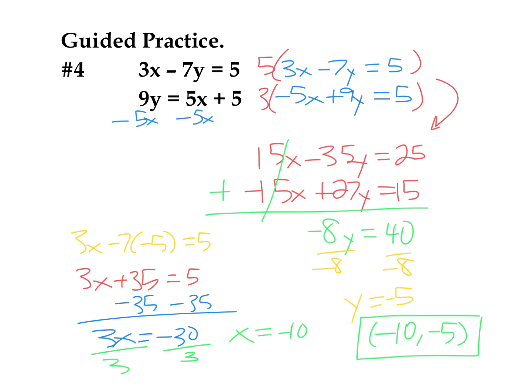Rearranging terms is one of the first things we look at when using elimination — whether or not we need to multiply equations. We need to get x's and y's lined up, equal signs aligned, and constant terms lined up. Then look for what we can do to get one of those coefficients to eliminate by addition or subtraction. I showed I like to get opposite signs so I can add the two equations together. Eliminate a variable, solve, then plug that back in to solve for the other one. And don't forget to write your final answer as an ordered pair x comma y.